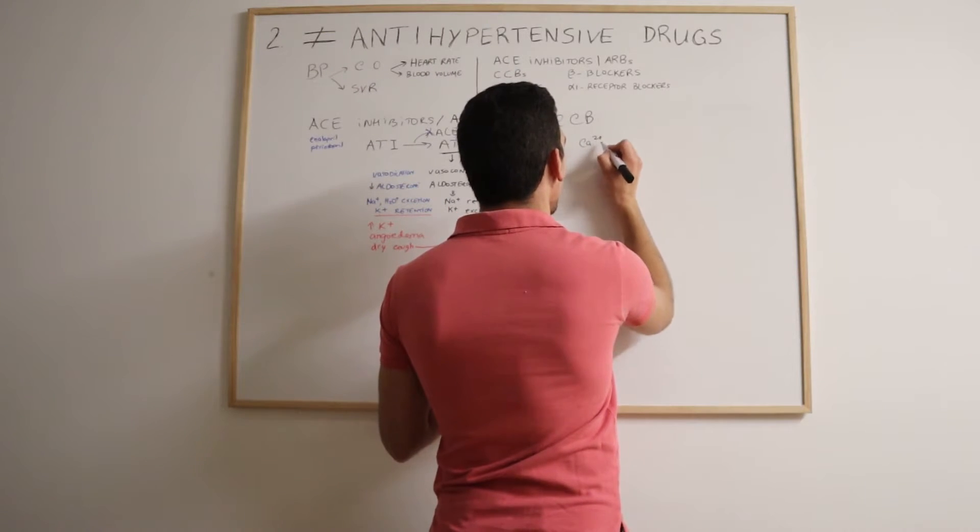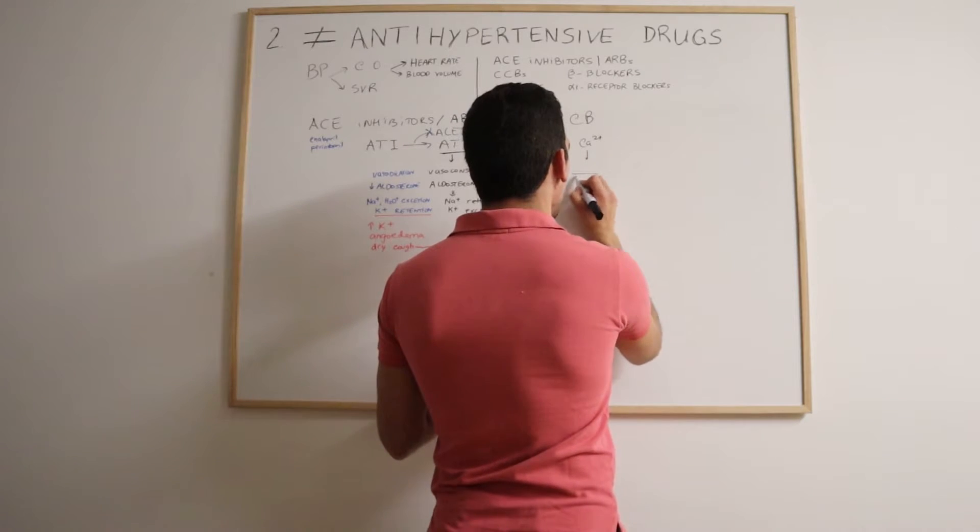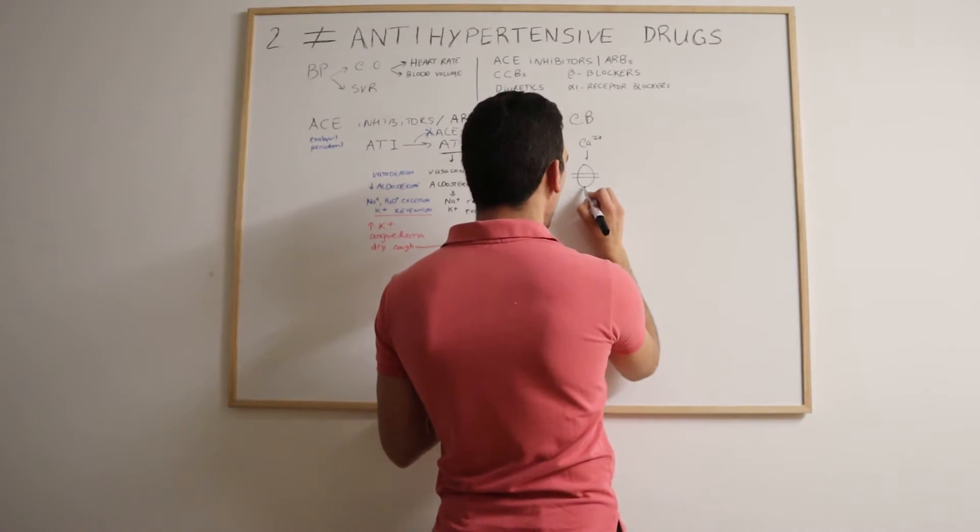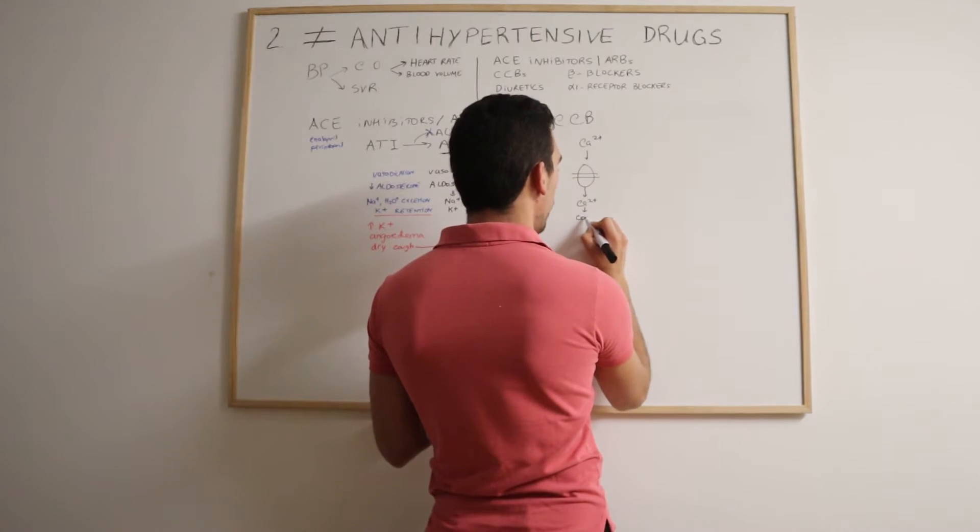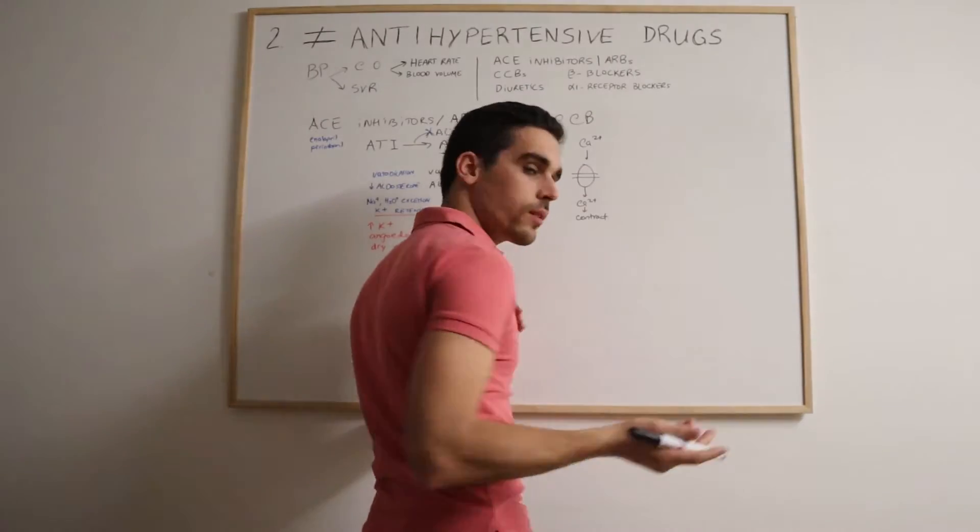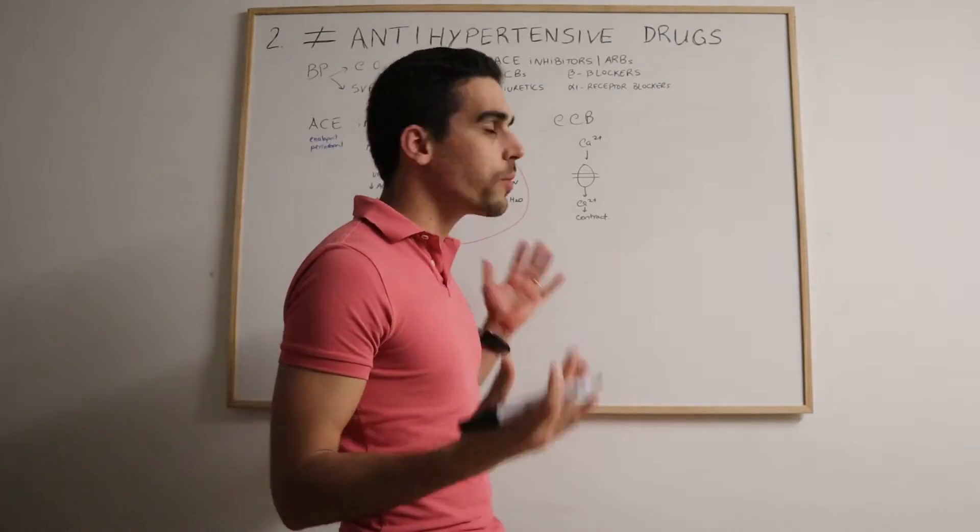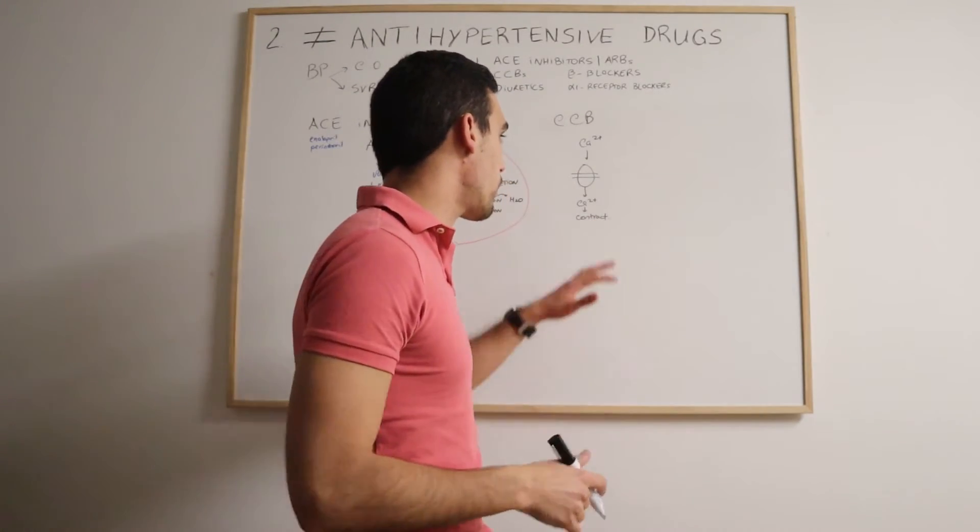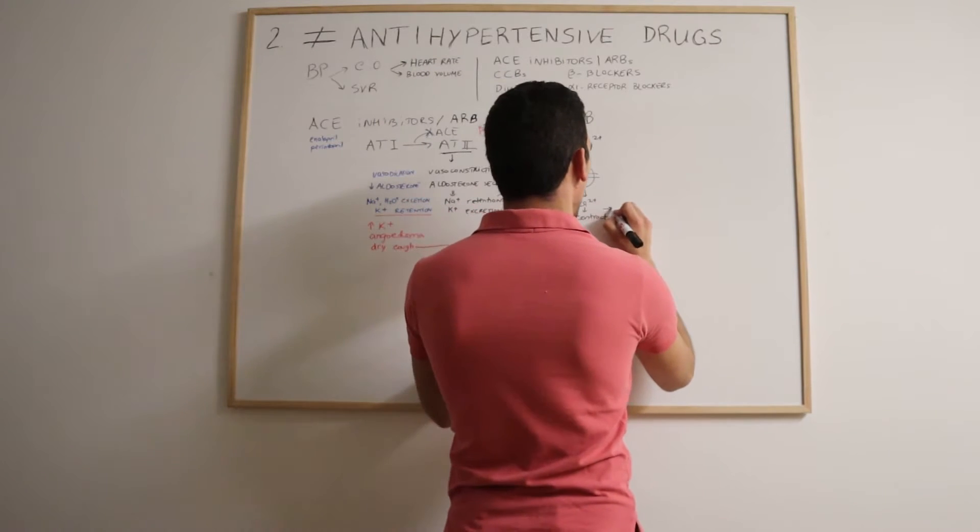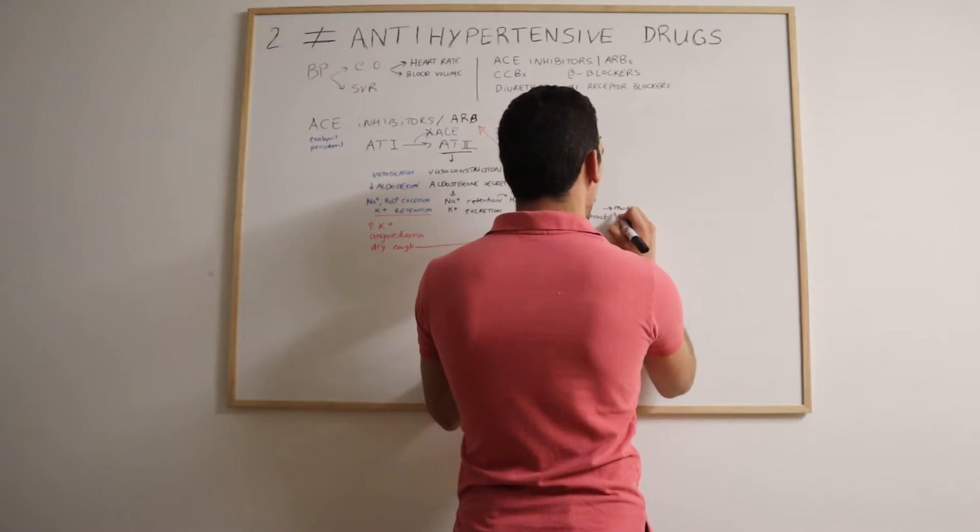Normally the extracellular calcium goes into the cells through calcium channels, and then once it enters the cells, then it makes, for example, the muscle cells to contract. So that's pretty much what it does, it blocks all this process. So there is muscle relaxation.